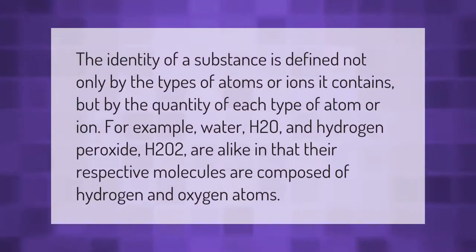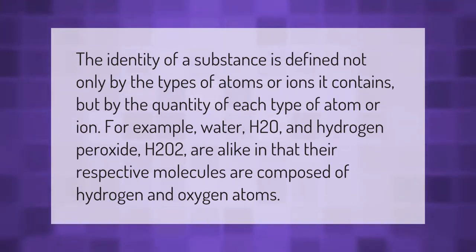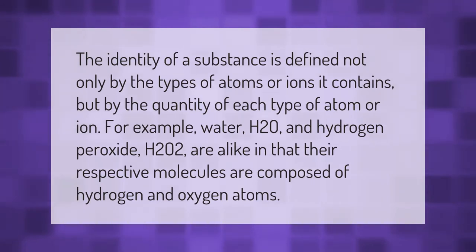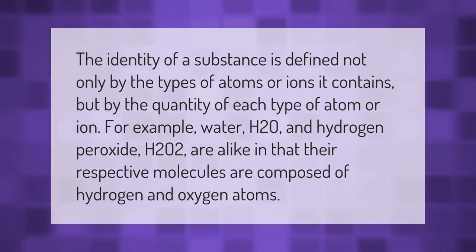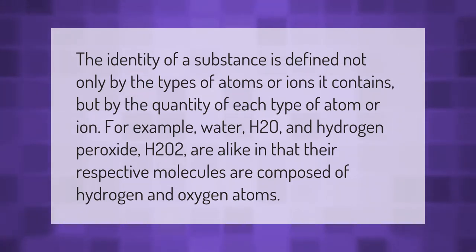The identity of a substance is defined not only by the types of atoms or ions it contains, but by the quantity of each type of atom or ion. For example, water (H2O) and hydrogen peroxide (H2O2) are alike in that their respective molecules are composed of hydrogen and oxygen atoms.